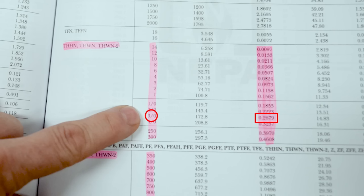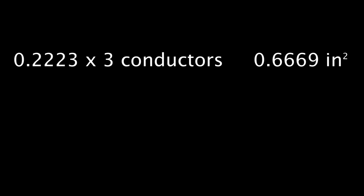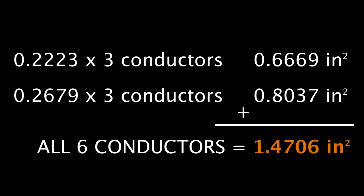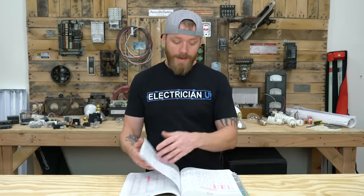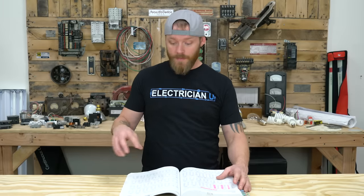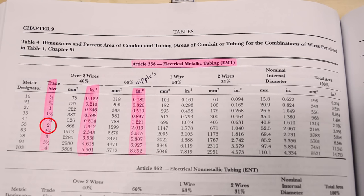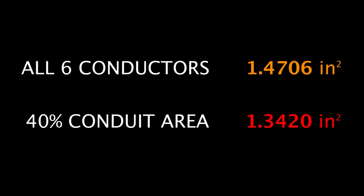Now multiply each of those values by 3, since we have three 2-aught conductors and three 3-aught conductors. All together that equals 1.4706. Then go to table 4, look at 2-inch EMT, go over to the 40% column under inches squared, and 2-inch says 1.342. So no — those conductors will not fit per code. They may fit if you cram them in, but to code you're not supposed to put those in there.